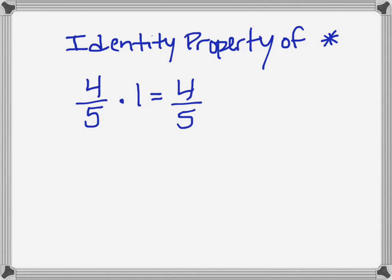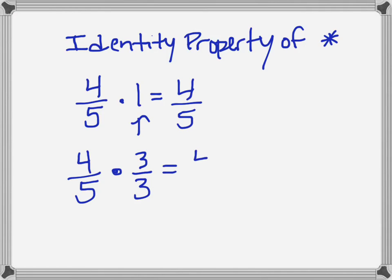Four-fifths times one would still be four-fifths. And I can choose to multiply by one in really any way that I choose. So I could have easily said four-fifths times three over three, and because three over three is still the same thing as one, this fraction doesn't change — that's still four-fifths.